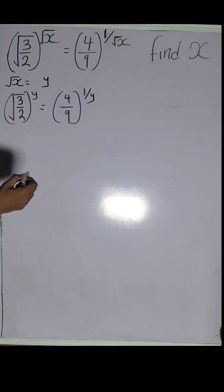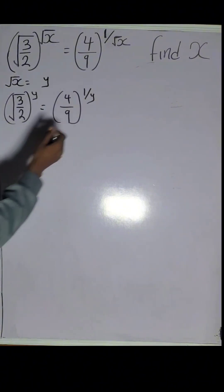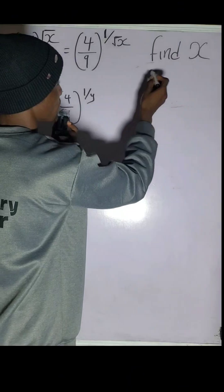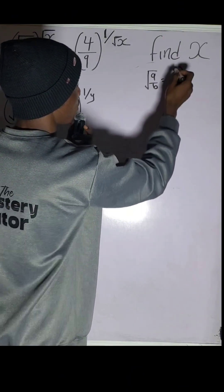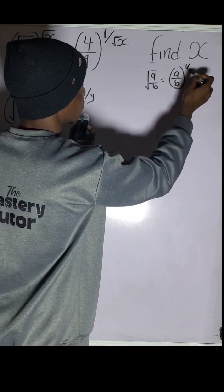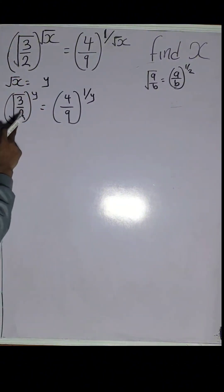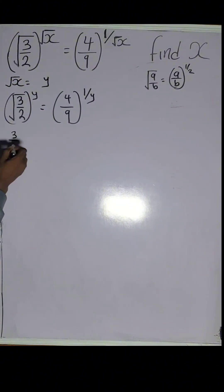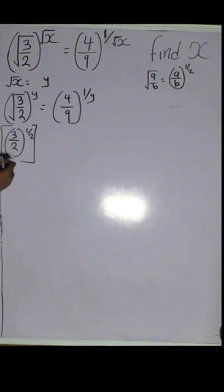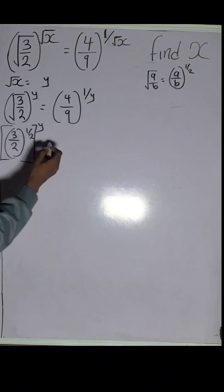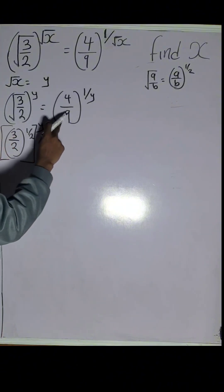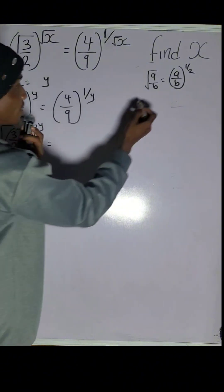Now, recall that square root of a over b equals a over b raised to the power of 1 over 2. So square root of 3 over 2 can be written as 3 over 2 raised to the power of 1 over 2, multiplied by y. On the right side, 4 over 9 can be written as 2 over 3, raised to the power of 2.